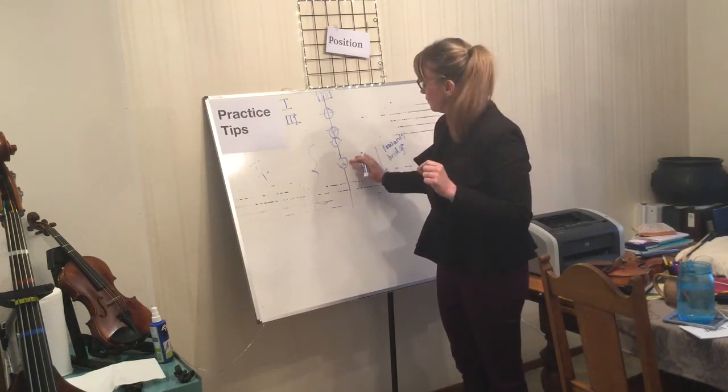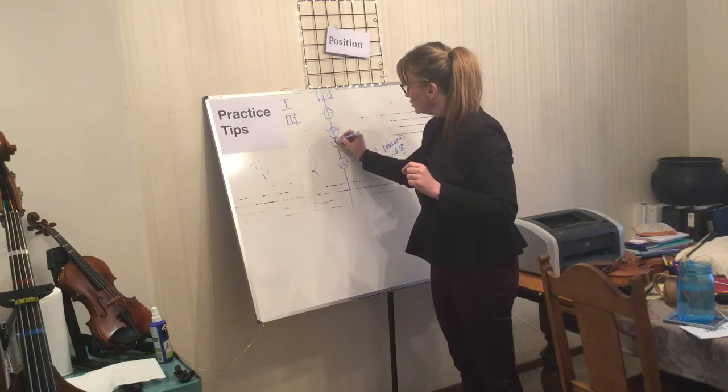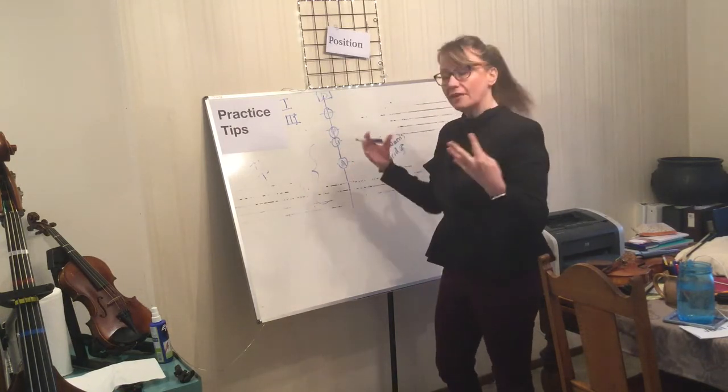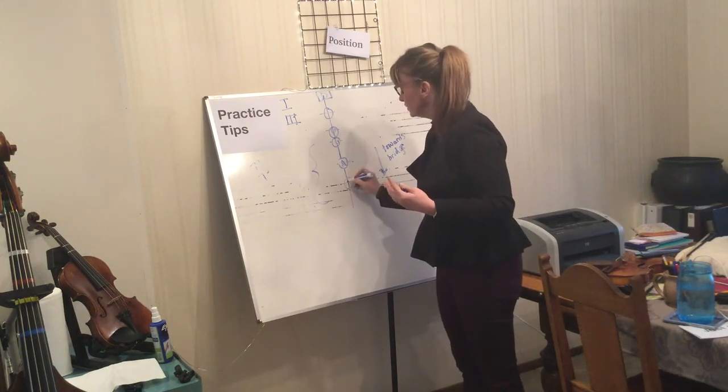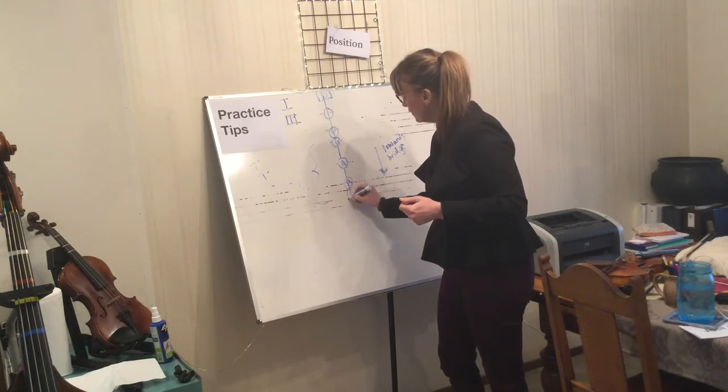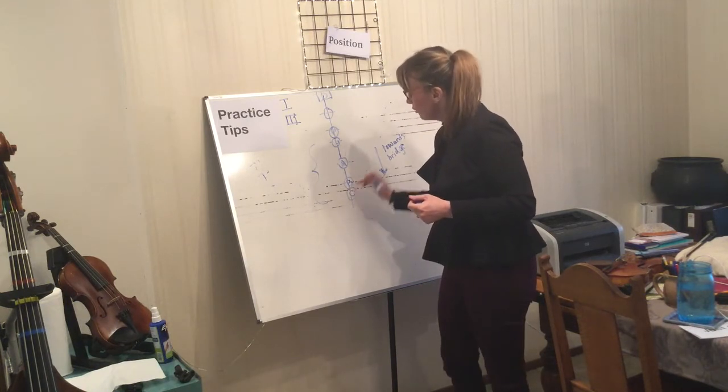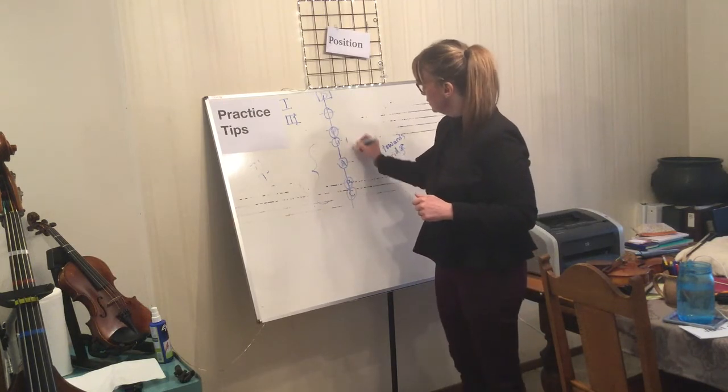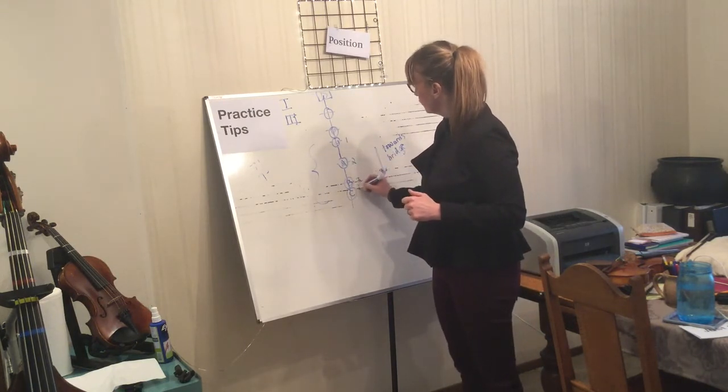On our fourth finger tape, that will become A. We have to have B too, and B is a whole step away so we're gonna have a big whole step there. Then we will set our fourth finger on a half step away, C. So this is our third position placement.